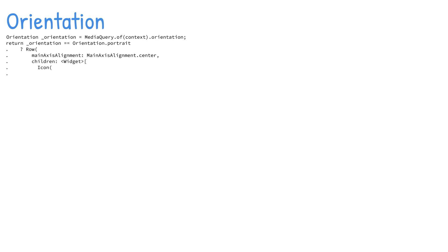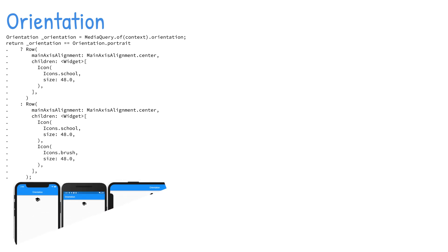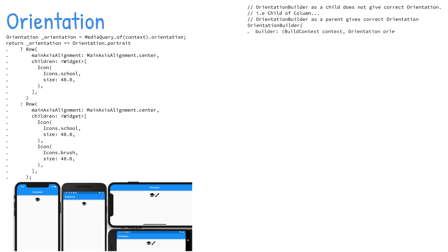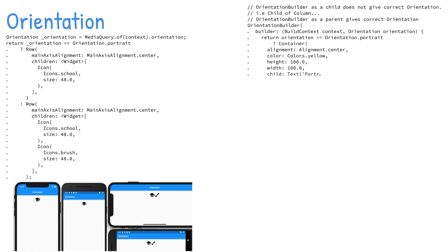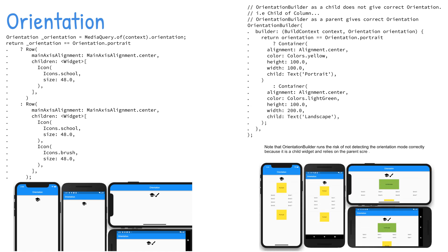Under certain scenarios, knowing the device orientation helps in laying out the appropriate UI. There are two ways to figure out orientation: media query of context orientation and orientation builder. The orientation builder returns the amount of space available to the parent to figure out orientation, which means it doesn't guarantee the actual device orientation. Using media query is preferred for obtaining the actual device orientation because of its accuracy.